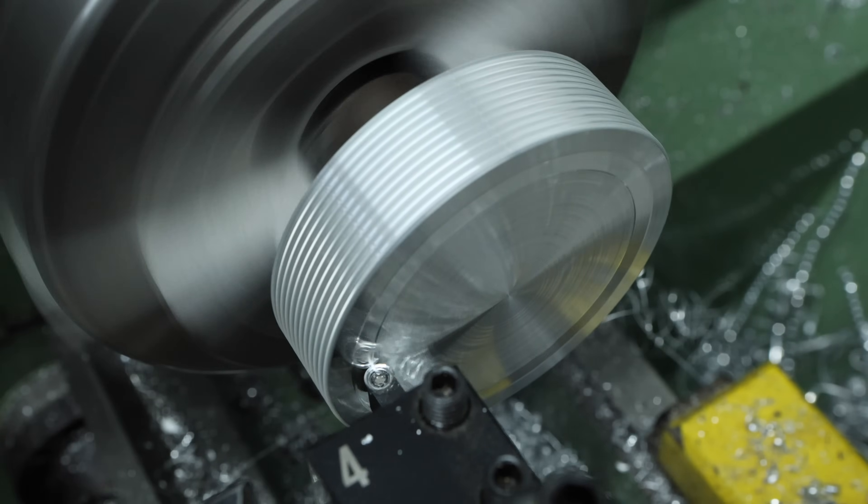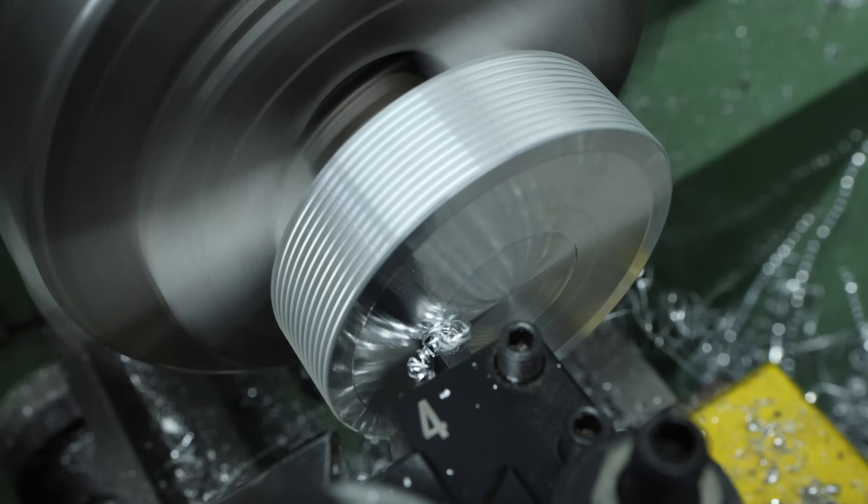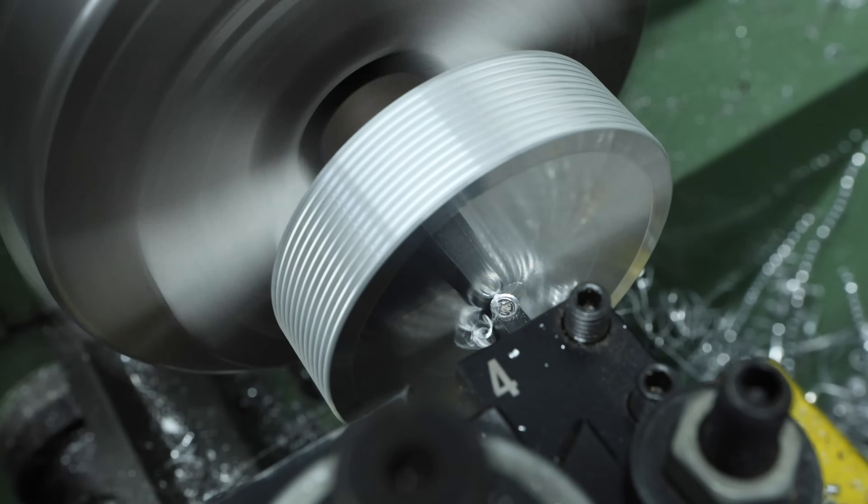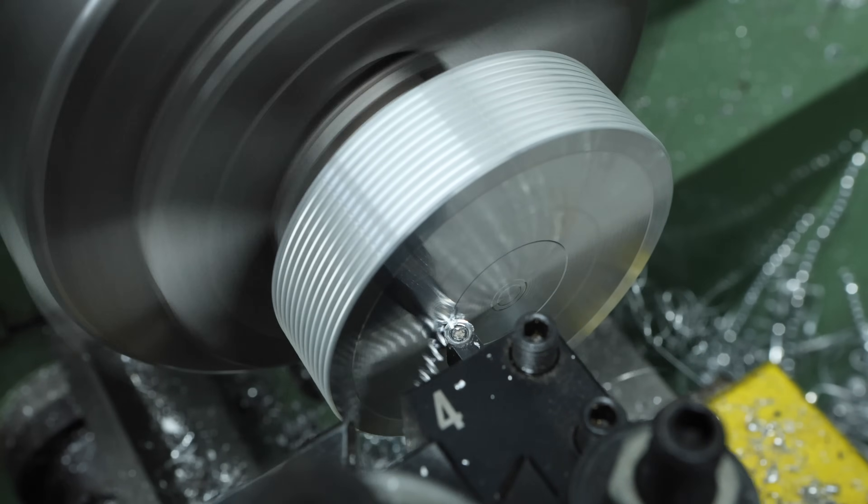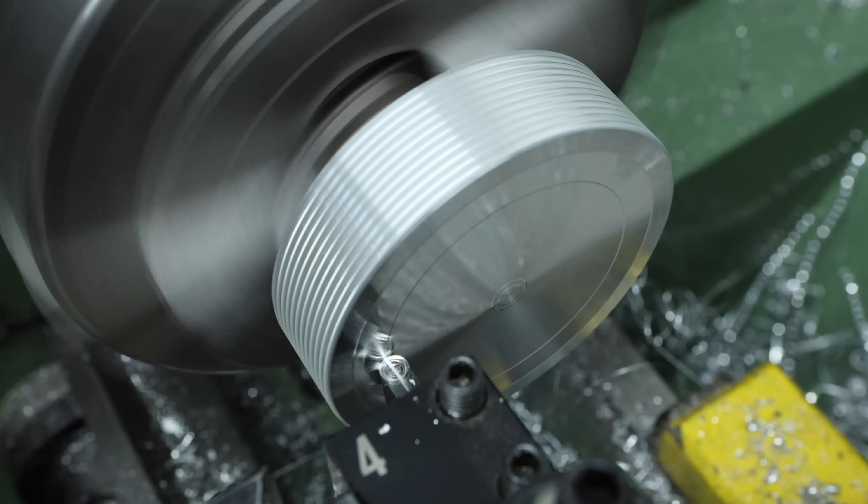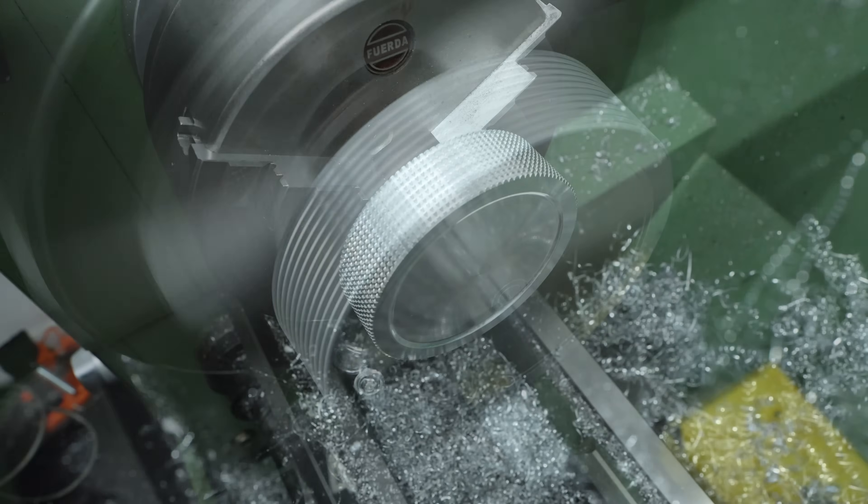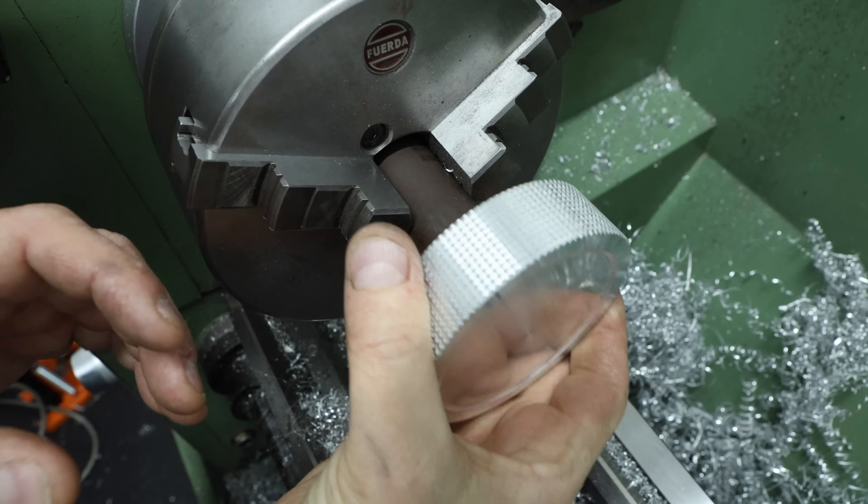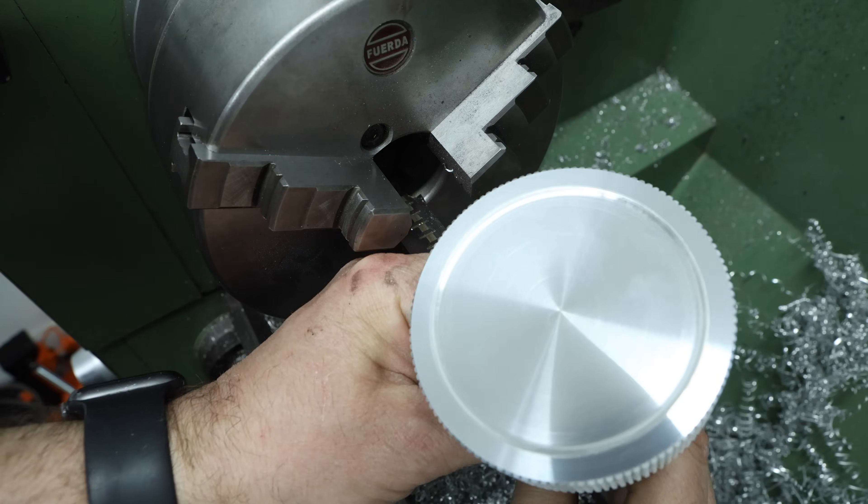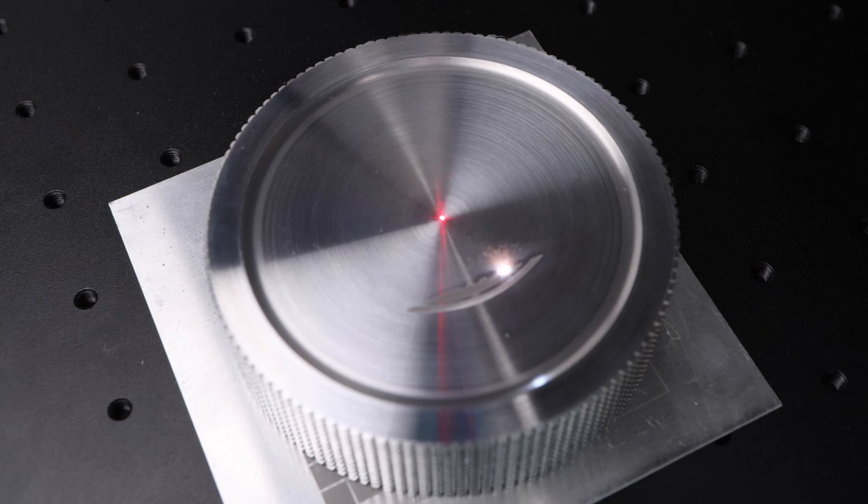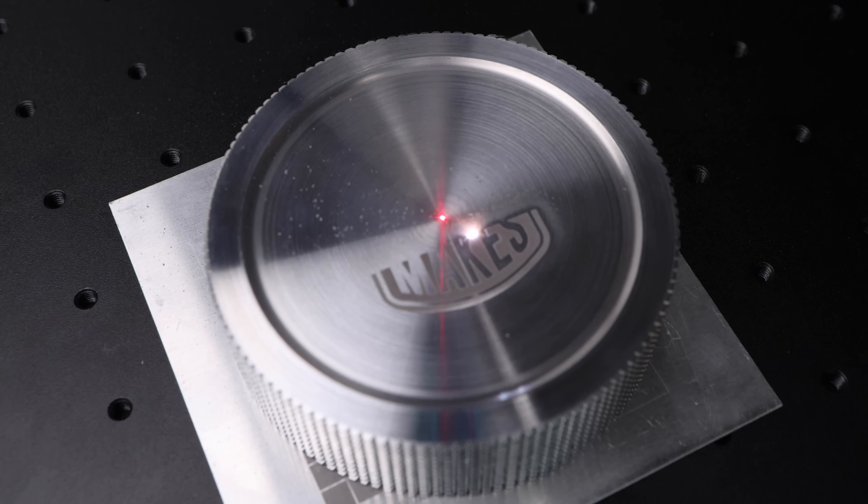I then used that button tool to create another aesthetic recess, but this time on the front of the handwheel. And to finish the piece off I'm going to engrave my logo with the laser.